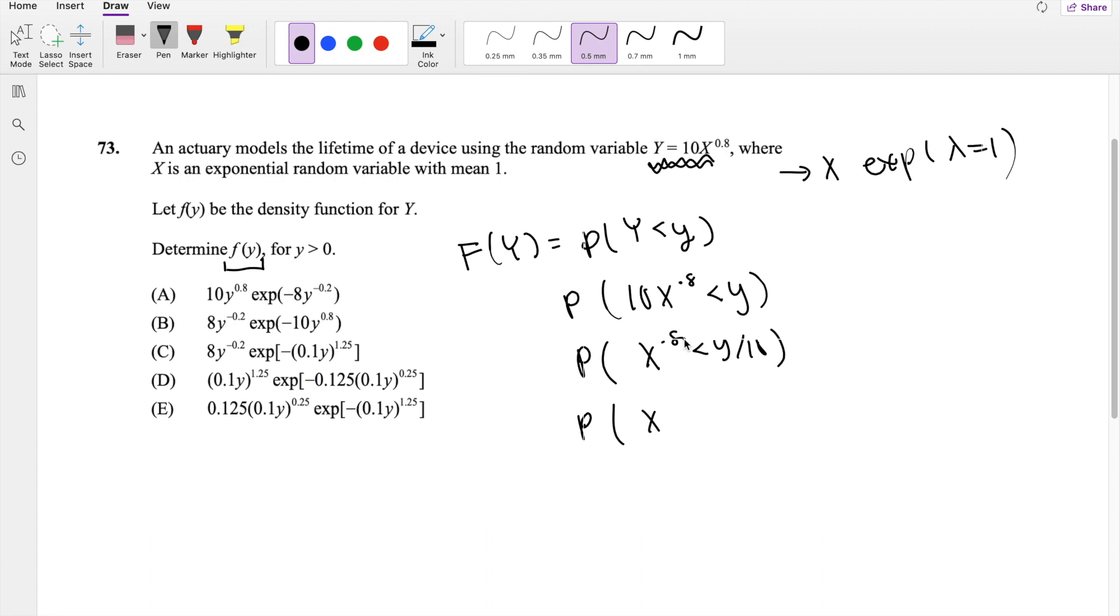So secondly, we can do like times 1 over 0.8 to cancel it out. So we just have to do times 1 over 0.8 here on this side. So you get x is less than y over 10 to the 1 over 0.8, which is the equivalent to saying 1.25. Magic.